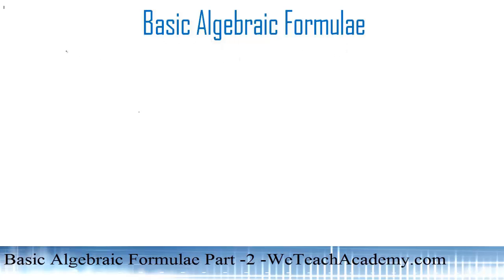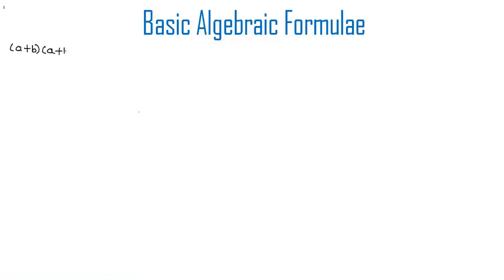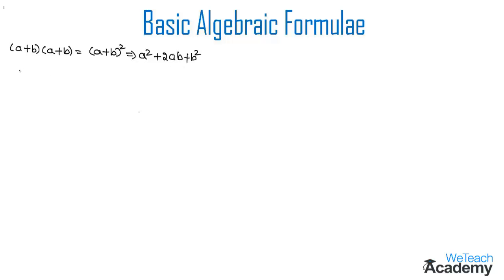We know that the algebraic term (a + b) into (a + b) can be represented as (a + b) whole square, and in our previous video we derived the formula for (a + b) whole square, which is a squared plus 2ab plus b squared. Similarly, (a − b) into (a − b) can be written as (a − b) whole square, and the formula for that is a squared minus 2ab plus b squared.